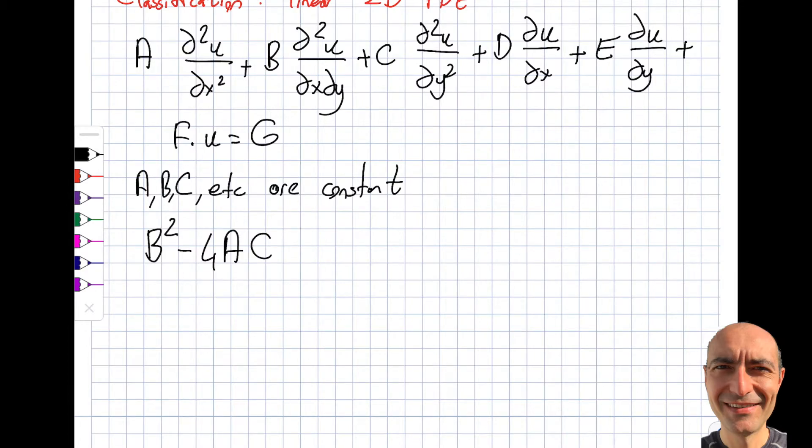B² minus 4AC. If it is larger than zero—and obviously it goes without saying, but this is B, this is A, this is C—so I don't look at these, but I only look at A, B, and C. That will be sufficient for second orders. I will get myself hyperbolic.